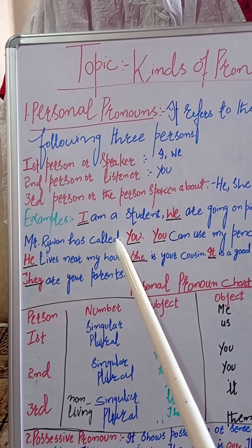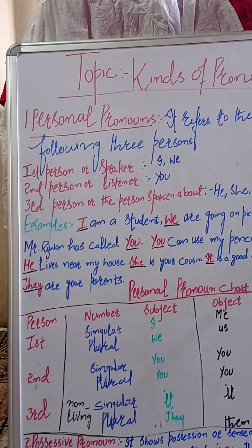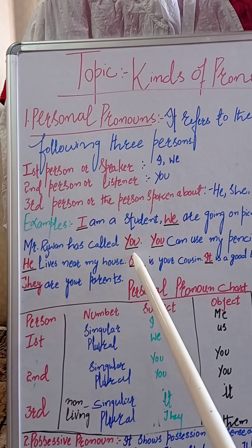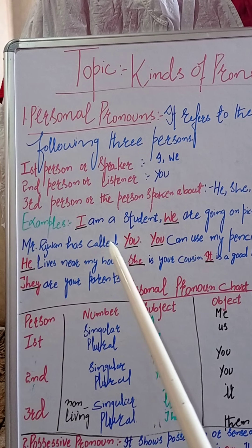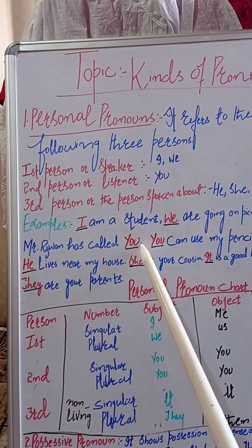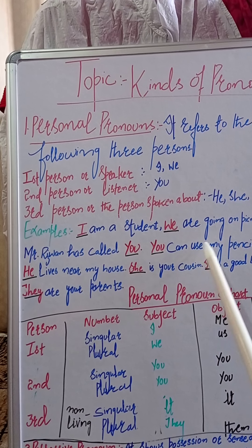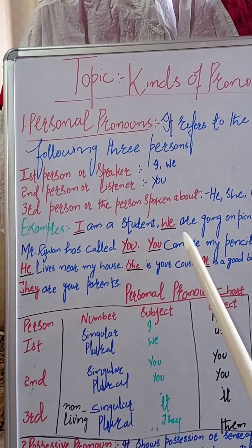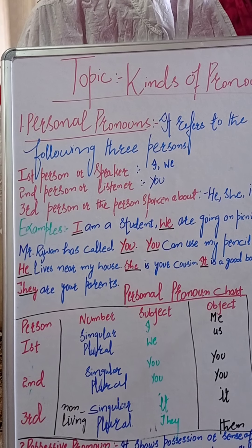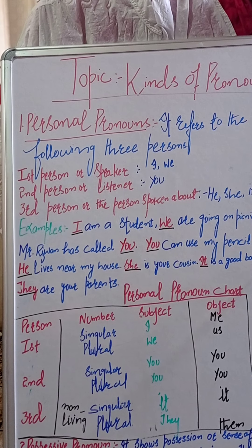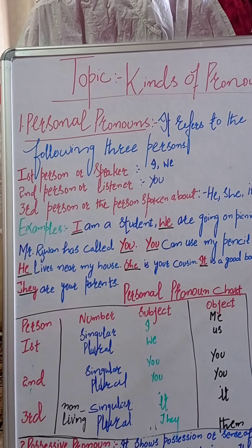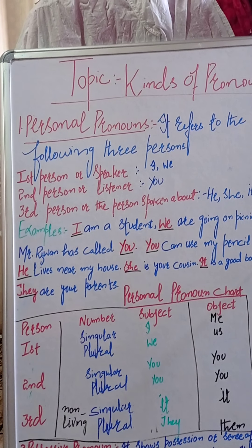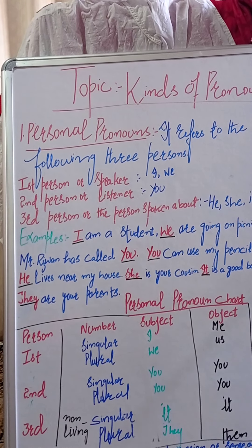Now second example: 'Mr. Rizwan has called you. You can use my pencil.' آپ کسی کو بول رہے ہیں، وہ سن رہا ہے۔ Mr. Rizwan نے آپ کو بلایا، آپ میرا pencil استعمال کر سکتے ہیں۔ کوئی سن رہا ہے آپکی بات — that is second person. First person بولنے والا ہوتا ہے، second person سننے والا ہوتا ہے۔